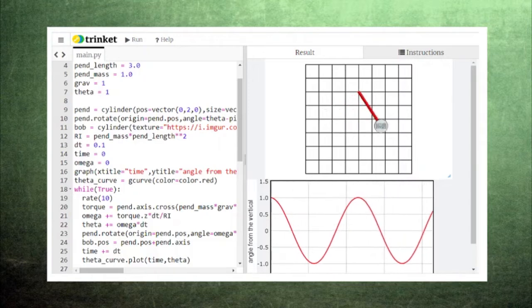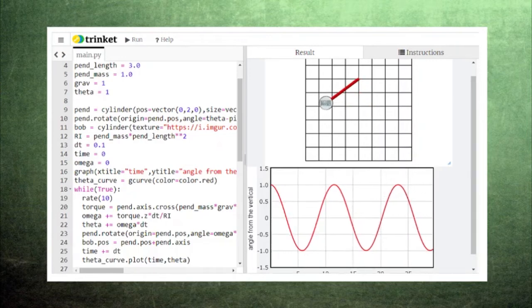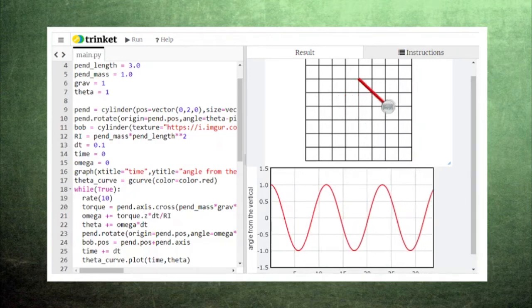The graph of the pendulum arm's angle with the vertical looks a lot like a cosine function, and for small oscillations, this is a pretty good match.